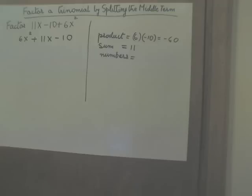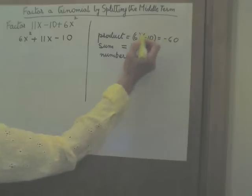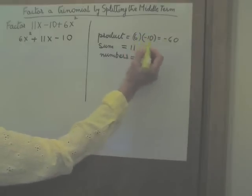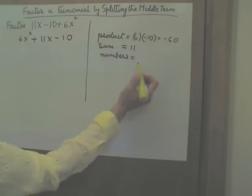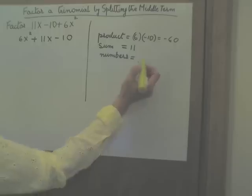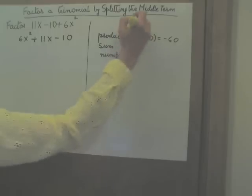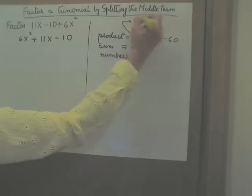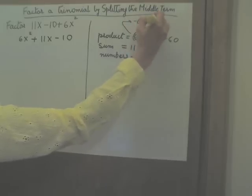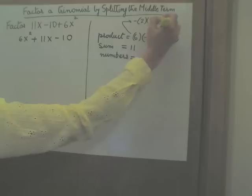However, to keep our thoughts organized, let's factor these two numbers, 6 and negative 10, into their prime factors. And let's pull out that negative sign out in front. Negative, instead of 6, 2 times 3, and instead of 10, 2 times 5.